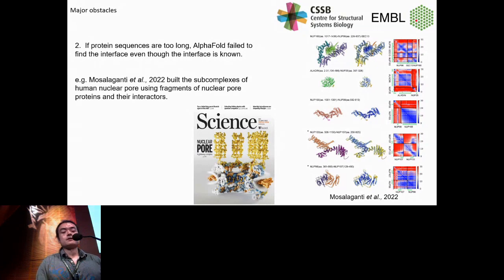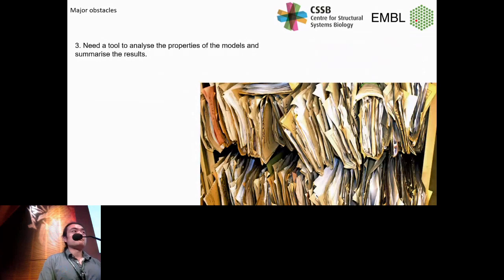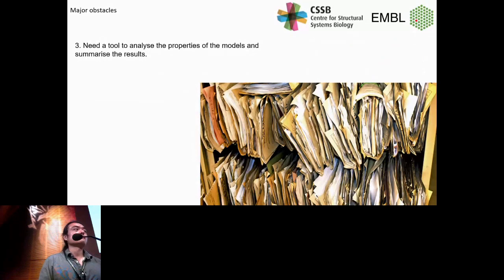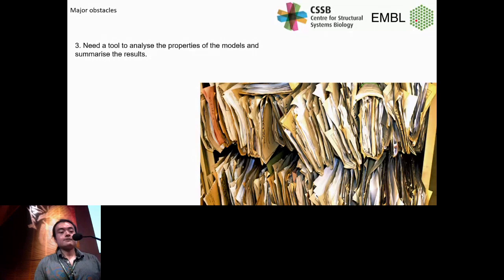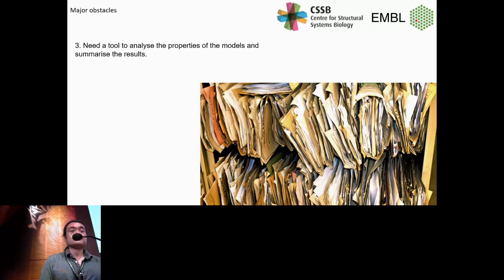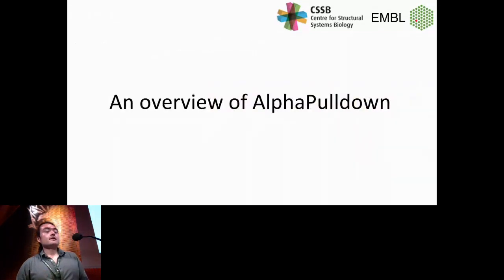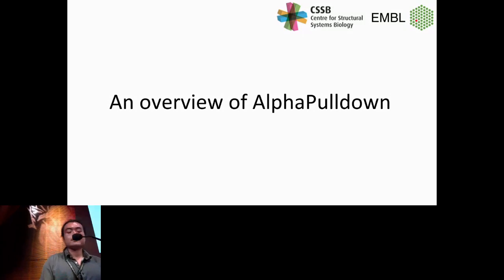The last obstacle is that when the number of models is too large, you end up with hundreds of folders containing thousands of PDB files, and no one is going to go through them one by one. So I needed to develop a summary tool so users can have a brief, neat overview of all the models they've produced, ideally with model quality as well. These three obstacles form the three major pillars of my software called AlphaPulldown.